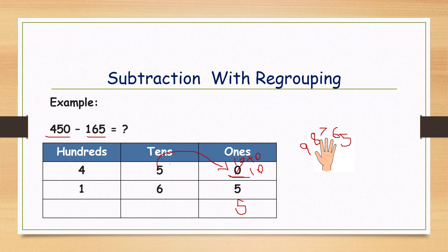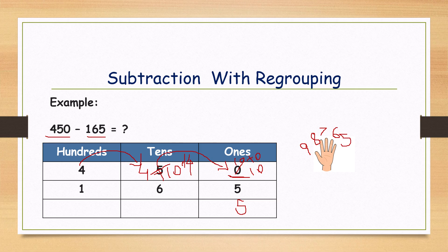What happened to the tens digit? It goes to one less number. What is five minus one? Four. Now four minus six — here also we can't do subtraction because the top number is less. So again we are taking borrowing, adding plus ten. What does it become? Ten plus four is fourteen.